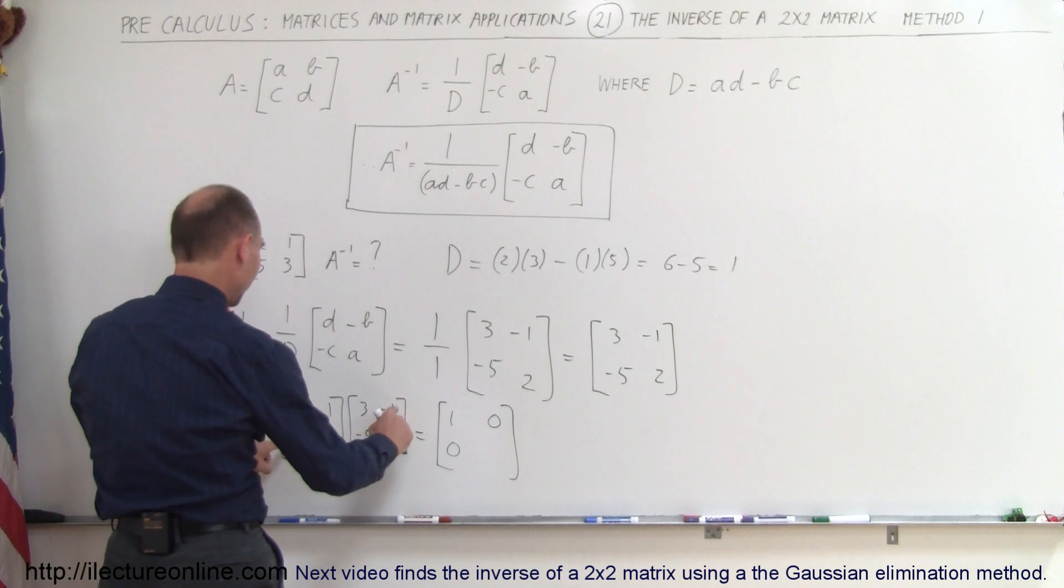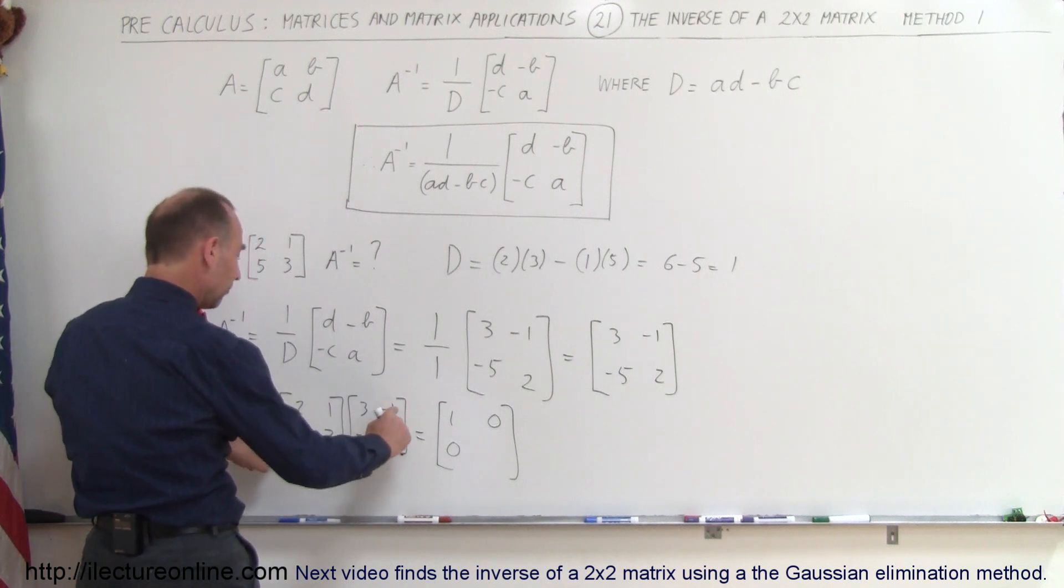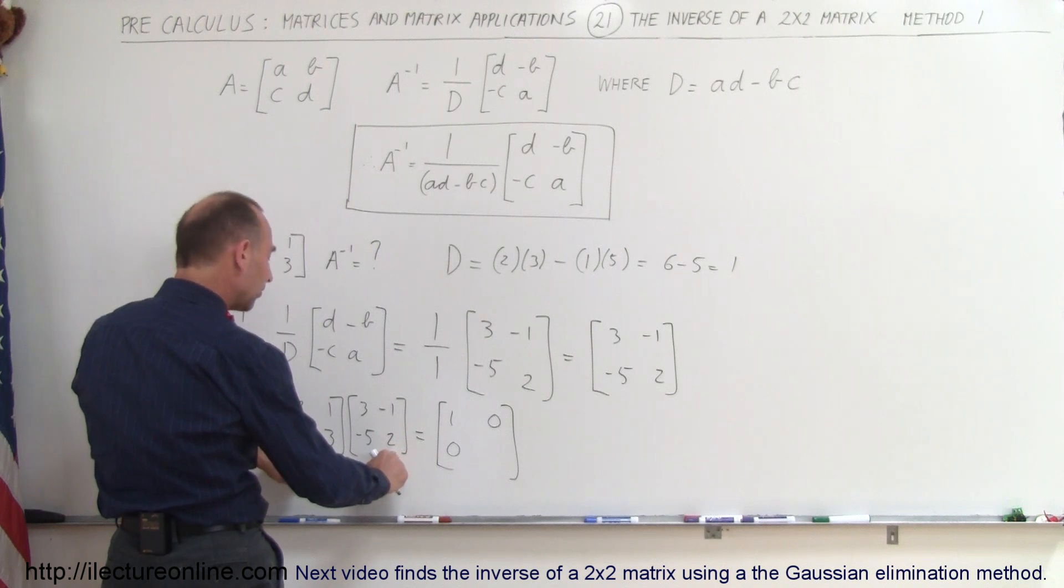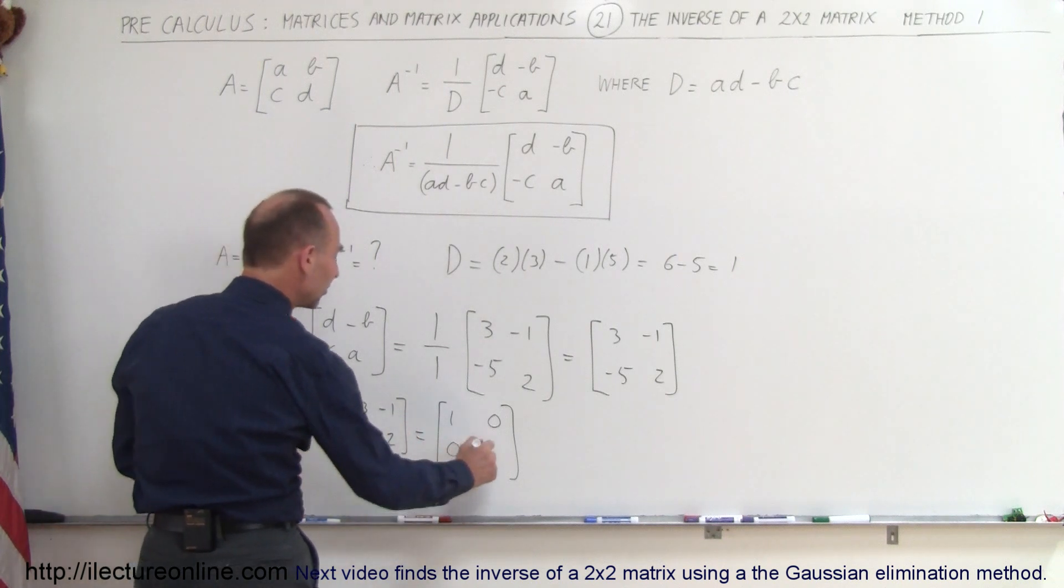And finally, I have this row times this column, so 5 times the negative 1 is a negative 5, 3 times 2 is a positive 6, negative 5 plus 6 gives me a positive 1.